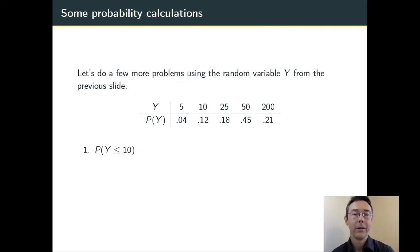Let's do a couple calculations using this same discrete probability distribution. To start, let's find the probability that Y is less than or equal to 10.